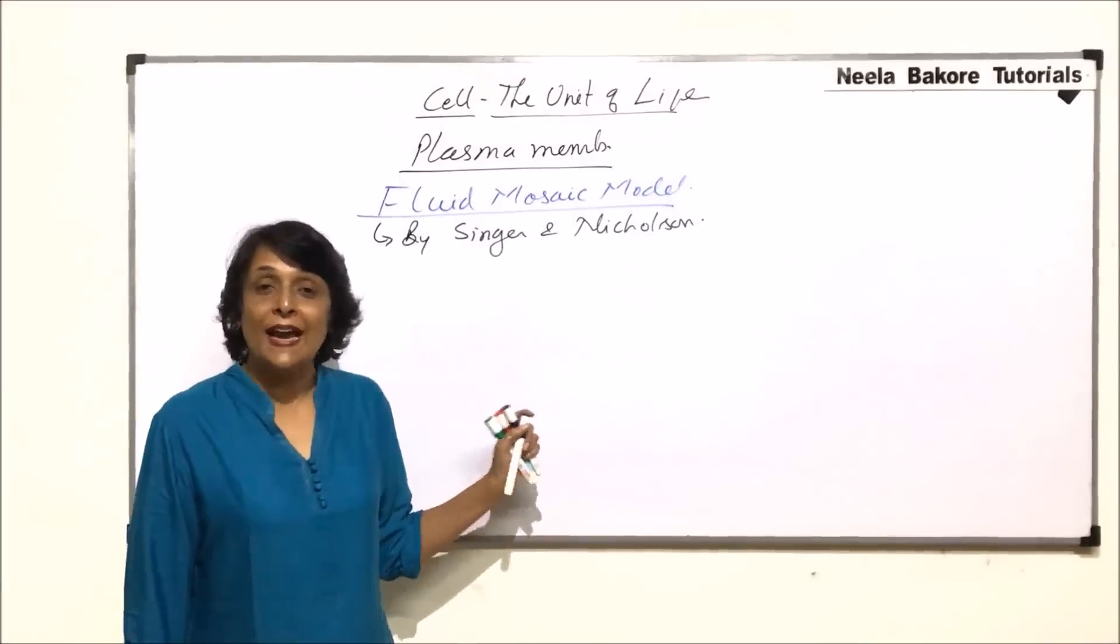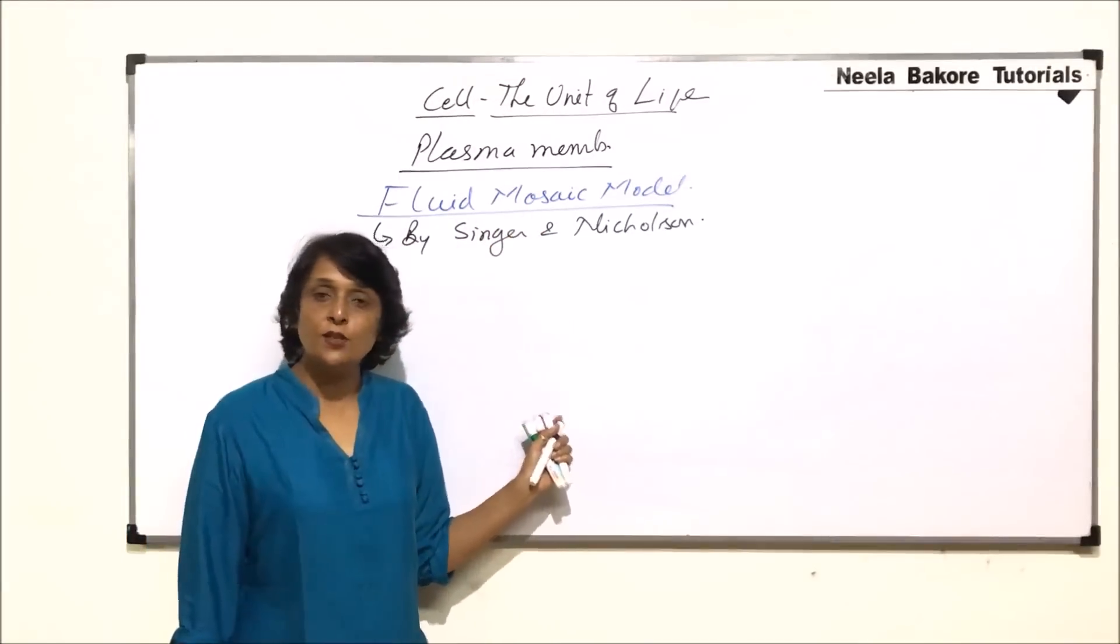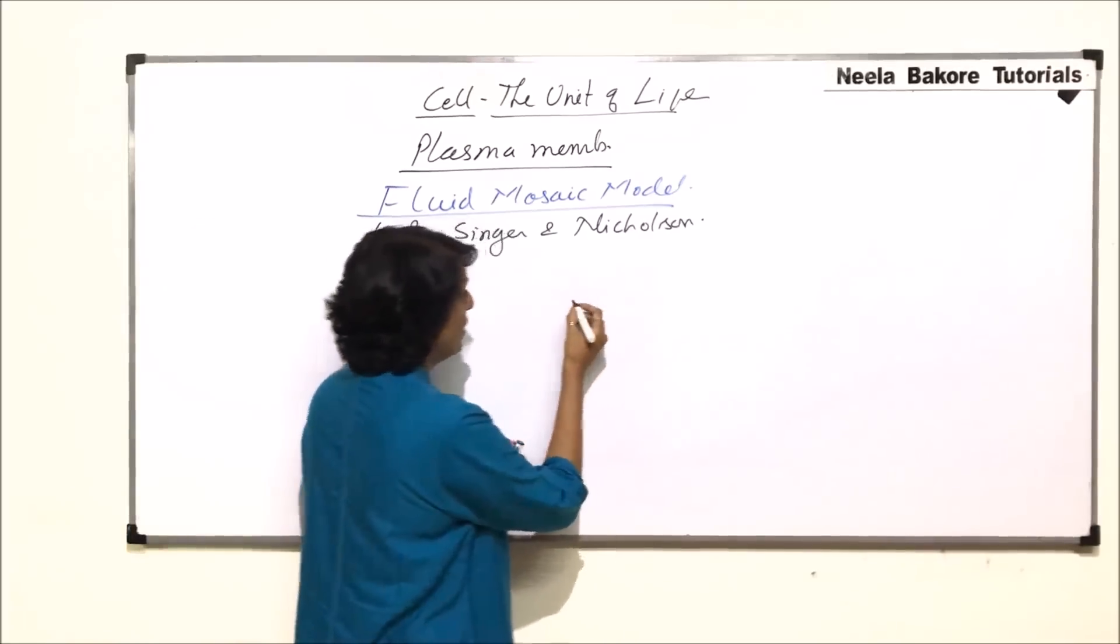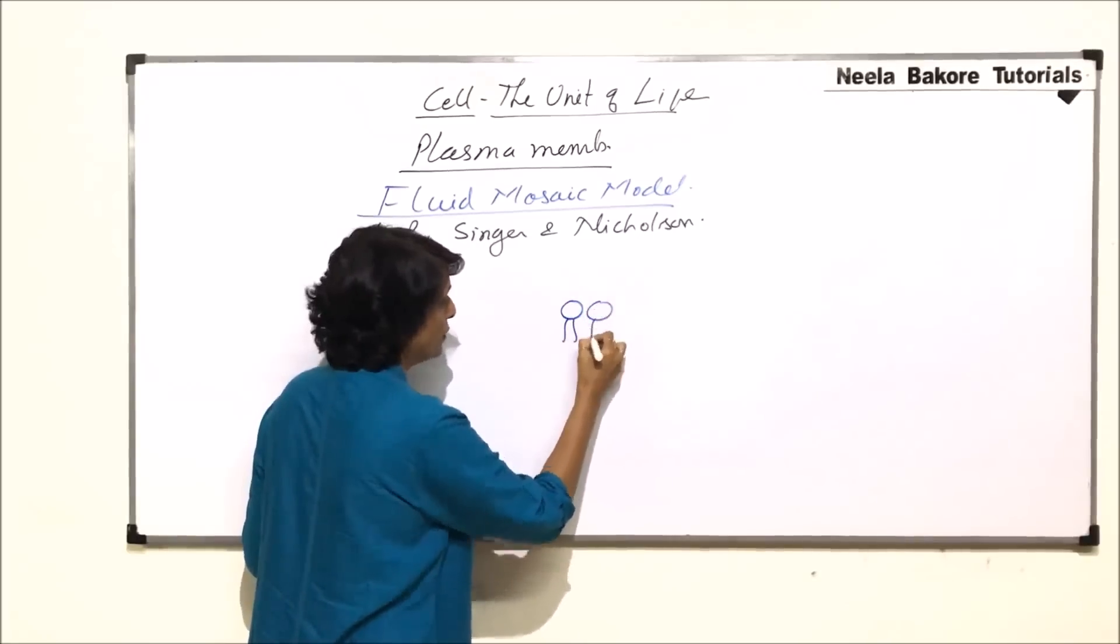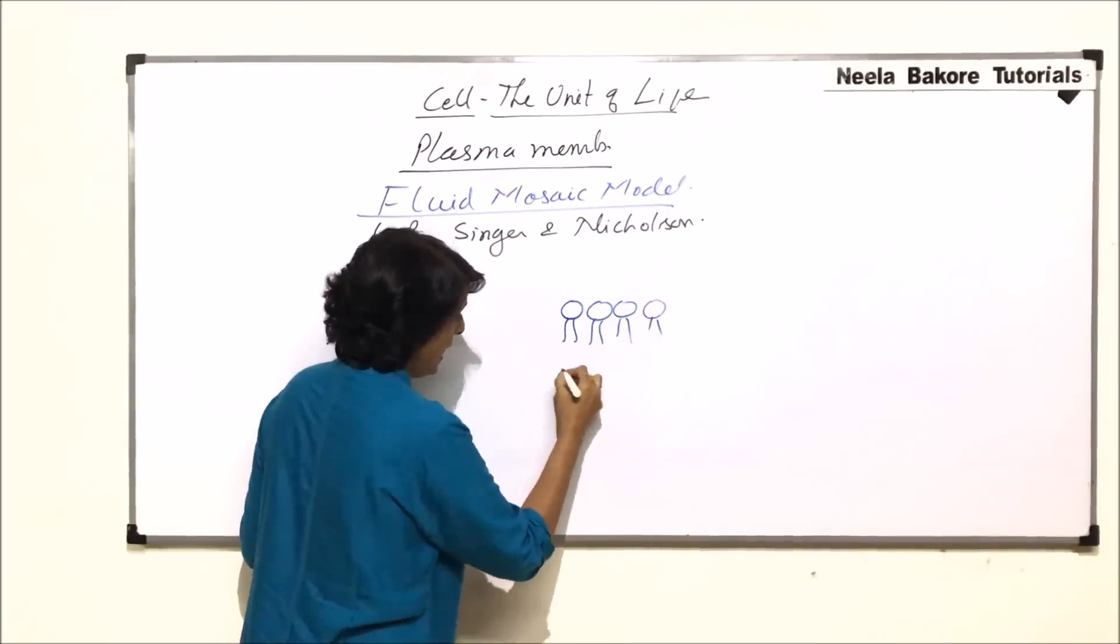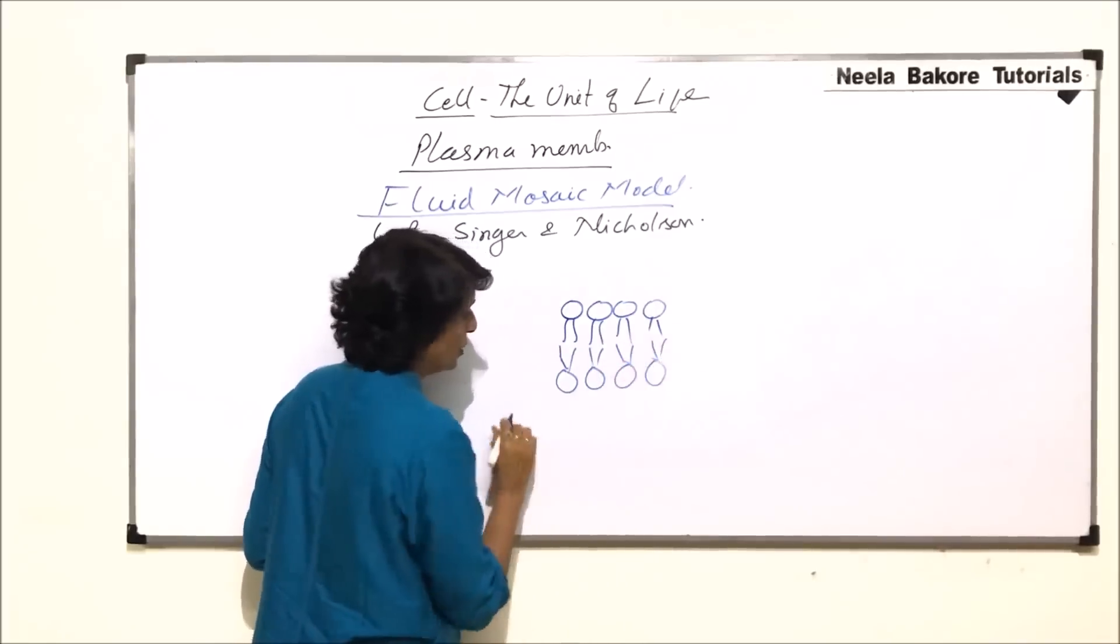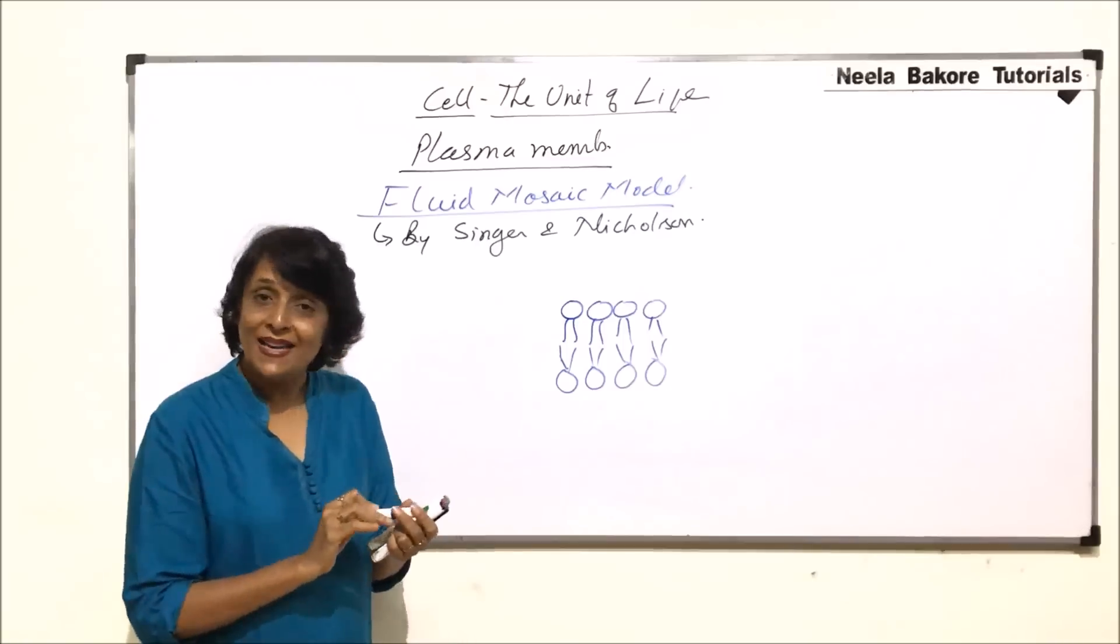Let us draw the diagram of this fluid mosaic model based on the information given by Singer and Nicholson. We are drawing this phospholipid bilayer, showing the heads and the two tails. In the other layer, the tails are pointing towards each other. These are phospholipid molecules in a bilayer.